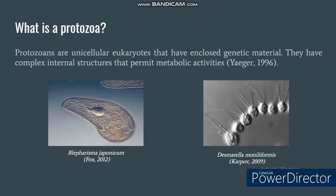To begin, let us define what protozoans are. According to Jaeger in 1996, protozoans are unicellular eukaryotes that have enclosed genetic material. They are different from other microorganisms such as bacteria because bacteria have no defined nucleus. In terms of their size, they are microscopic, and most of the parasitic protozoa found in humans are known to be less than 50 micrometers. Protozoans also have complex internal structures that permit them to perform metabolic activities.